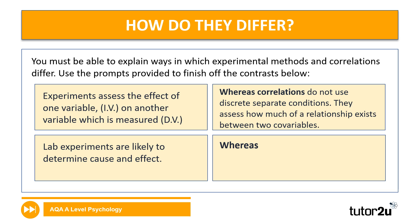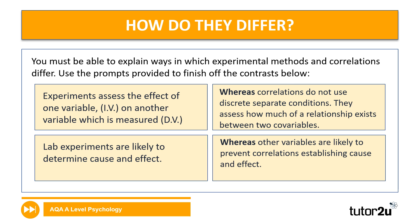So what is the 'whereas'? Correlations do not use discrete separate conditions — that's to say independent variables — they look at the relationship between co-variables. There's no manipulation of something; it's simply to assess if two variables are related. You can't scientifically determine the cause and effect relationship in a correlation because there is no manipulation of an independent variable to cause a change in a dependent variable. The use of co-variables means there may be other variables that impact that relationship — all I can say from a correlational piece of research is that variables are related.